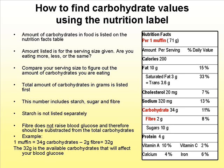Here we have one muffin. Are you eating more, less, or the same? What I want to know is: are you eating half a muffin, one muffin, or two muffins? Compare your serving size to figure out the amount of carbohydrates you're eating. Your total carbohydrates in grams is listed first — this number includes starch, sugar, and fiber. Starch is not listed separately. Fiber does not raise your blood glucose and therefore should be subtracted from the total carbohydrates. So one muffin contains 34 grams of carbohydrates minus 2 grams of fiber, giving us 32 grams of available carbohydrates that will affect your blood glucose.